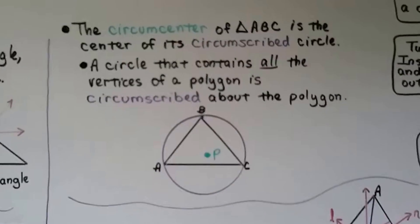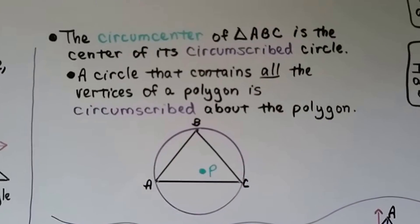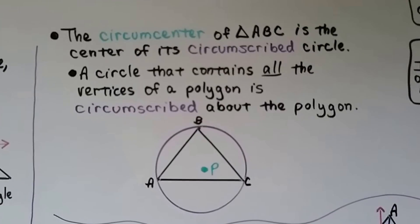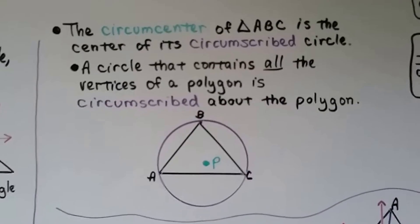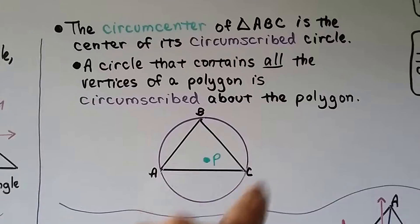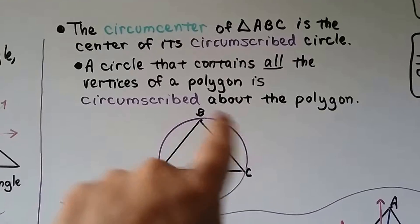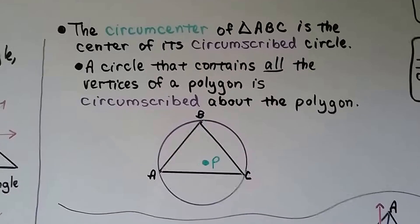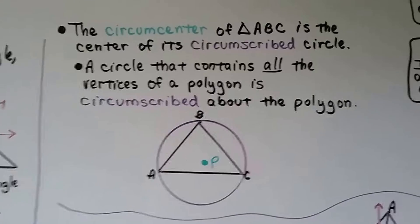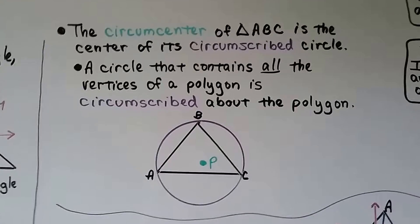The circumcenter of triangle ABC is the center of its circumscribed circle. A circumscribed circle is going all the way around the triangle. The circle that contains all the vertices of a polygon is circumscribed about the polygon.